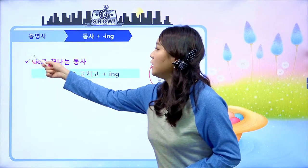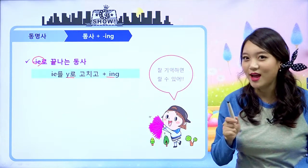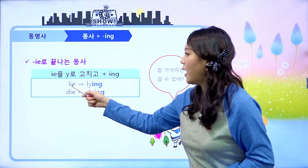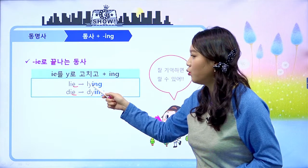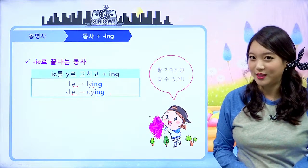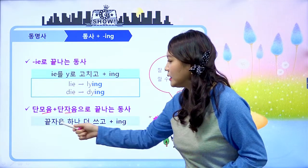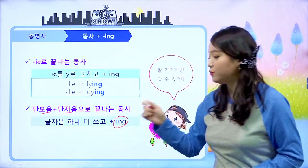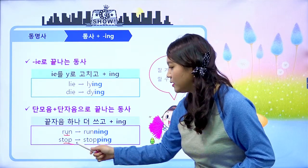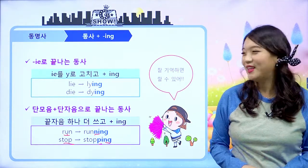ie로 끝나는 동사들은 ie를 y로 고치고 ing를 붙입니다. 예를 들면 lie(거짓말하다), die(죽다) 같은 경우 ie가 y로 바뀌고 ing를 붙여서 lying, dying 이렇게 됩니다. 또 단모음 단자음으로 끝나는 동사들은 끝자음을 하나 더 쓰고 ing를 붙입니다. 예를 들면 run, stop 같은 경우 뒤에 자음을 한 번 더 쓰고 ing를 붙여서 running, stopping 이렇게 됩니다.